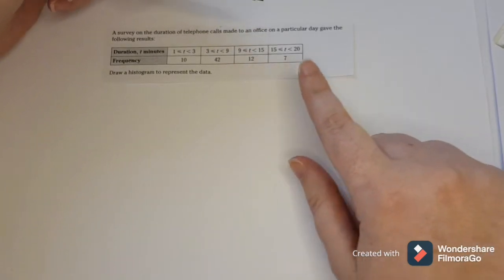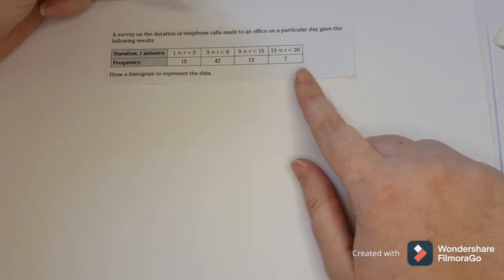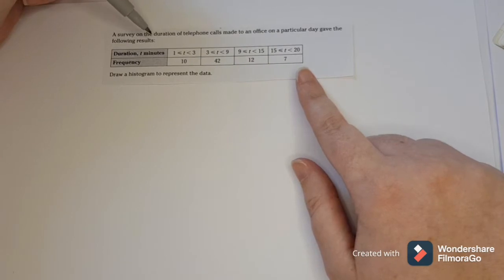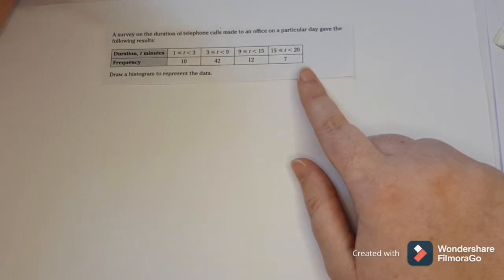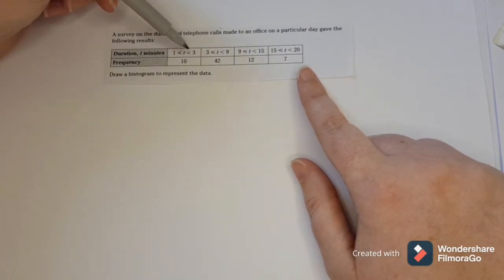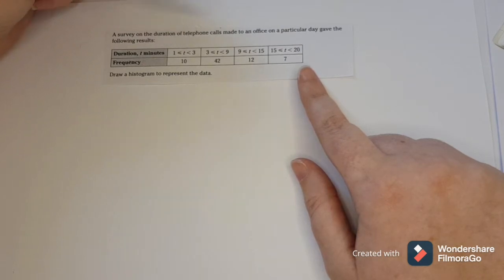Looking at the information here, we've been given the duration of phone calls and the frequency of those durations — between one and three minutes, three and nine, and so on.